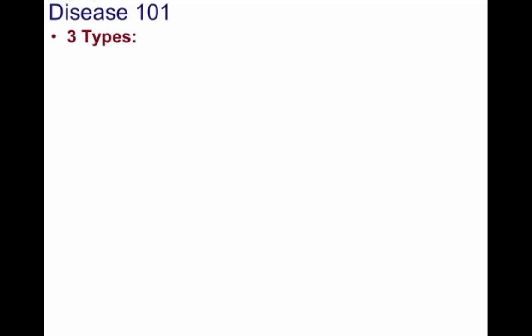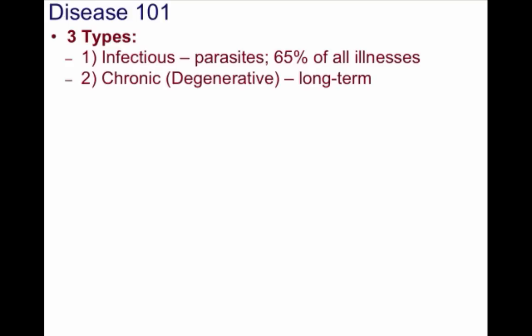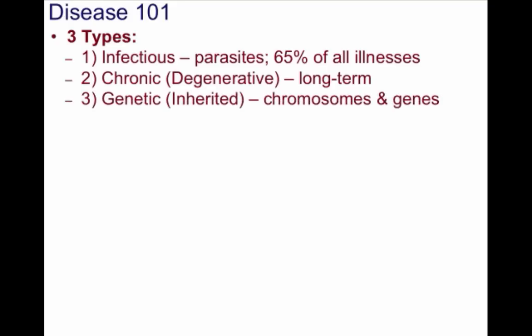Let's have a little Disease 101. There are three different types of diseases. You have infectious diseases, which are caused by parasites, and this accounts for about 65% of all illnesses. You have chronic diseases, also known as degenerative, which tend to occur with a longer life expectancy. And then there are genetic, or inherited diseases, which tend to occur due to damage done by chromosomes and genes.